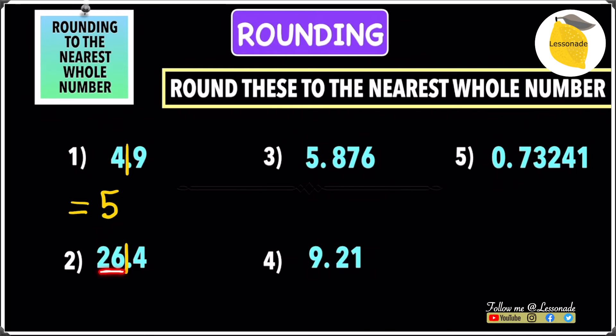26, leave it as it is. The 0.4 at the end will turn into 0, so you don't have to write that because 26.0 is the same as 26. There's no point in writing the 0, so just leave it as 26. Our answer is 26.